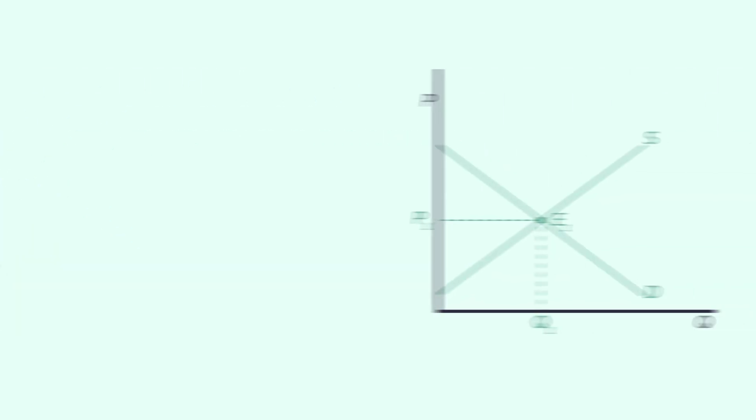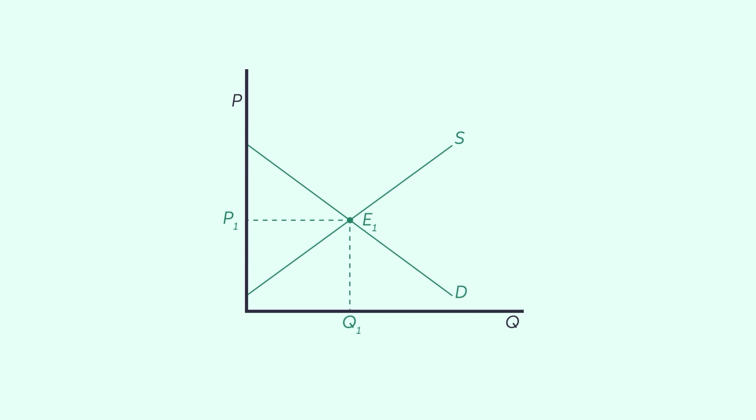In the second graph, let's try a larger shift in demand rather than supply. And the intersection of D3 and S3 produces a new equilibrium that still has a higher equilibrium price than the original state. However, this new equilibrium quantity is higher.